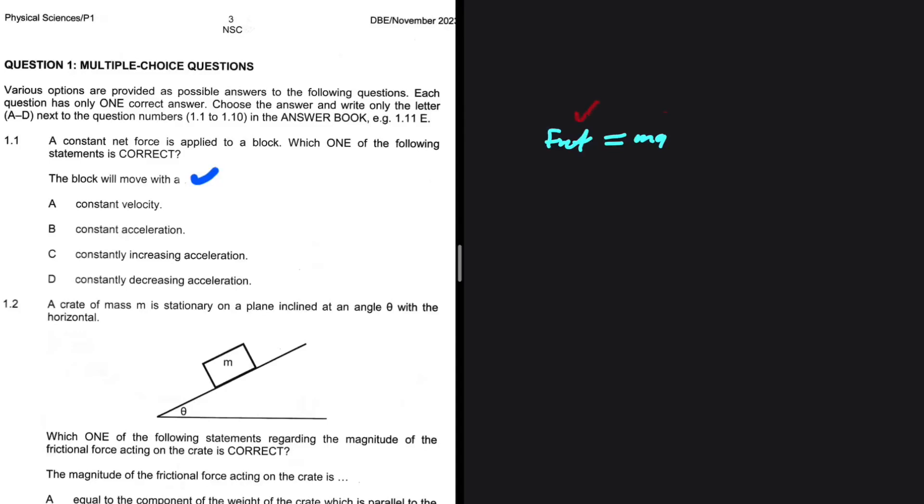If the net force is constant, the acceleration is constant. The first option says constant velocity. If it is constant velocity, the acceleration will be zero, so this is not true. Constant acceleration is option B, so that is our answer to 1.1. Constant force means constant acceleration, not constant velocity. Constant velocity implies that the acceleration is zero, which is not correct.